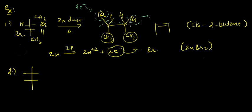First, the cleavage of the C–Br bond and formation of the double bond happens — this leaves Br⁻, leaving a positive charge here. The two electrons give it a Br⁻ charge, so the carbon gets a negative charge, and hence the double bond is formed.